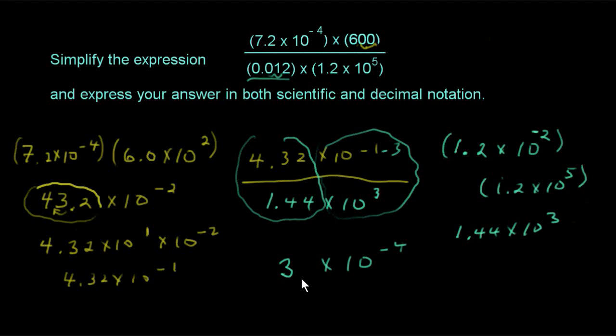3 times 10 to the negative 4. It's nice to put a decimal point and a zero in here to make it really look like it's scientific notation. I think that's the proper way to write it. 3.0 times 10 to the negative 4.